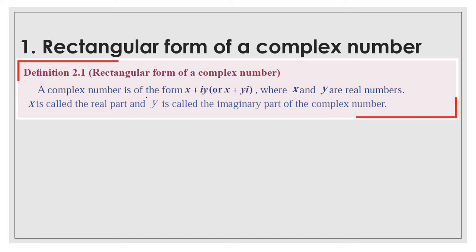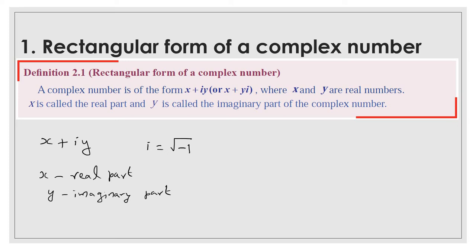So it is of the form x plus iy. We all know that i is equal to square root of minus 1. Here, x and y are real numbers. This x is a real number, y is a real number. So here this x is called the real part and y is called the imaginary part. So altogether, this x plus iy is a complex number. x and y are real numbers, but y is specially called the imaginary part.